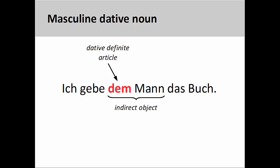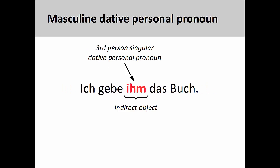Let's take a look at a few select examples. In the sentence ich gebe dem Mann das Buch — I give the book to the man — the definite article dem indicates that the masculine noun Mann is the indirect object in the sentence, and therefore in the dative case. I can replace the noun phrase dem Mann with the third-person singular dative personal pronoun ihm. Note that the final letter, m, in ihm matches the final letter in the definite article dem.